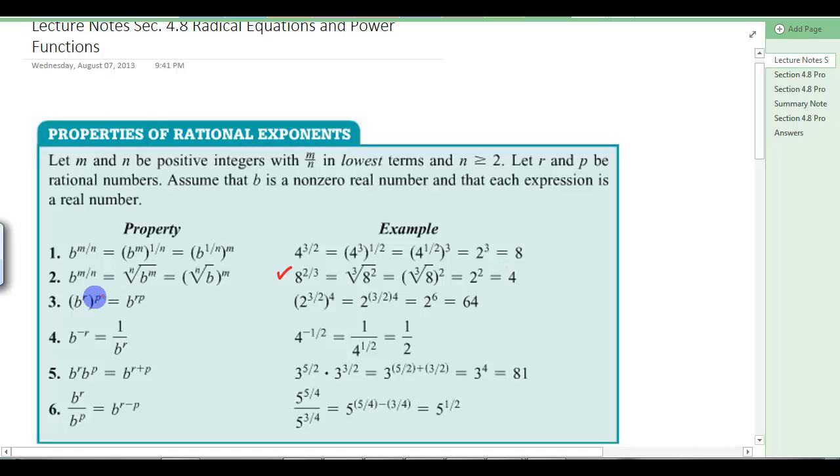This rule, power to power, you multiply those. So 2 to the 3 halves to the 4th means we're going to multiply 3 over 2 times 4. And remember that when you multiply a fraction times a whole number, you're just doing that. So it's 12 over 2, which is 6, 2 to the 6th is 64.